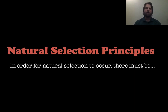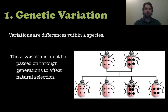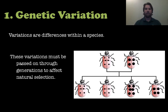We're going to talk about four different principles of natural selection. In order for natural selection to occur, there must be one of these four. The first one is genetic variation. Variations are slight differences within a species, and these variations must be passed on through generations to affect natural selection. We want to see slight variations in how organisms interact with their environment and whether they are less fit or more fit, which we can follow through generations.